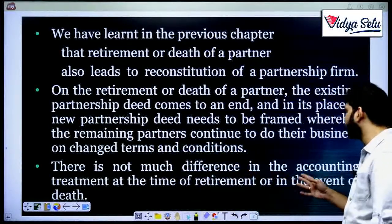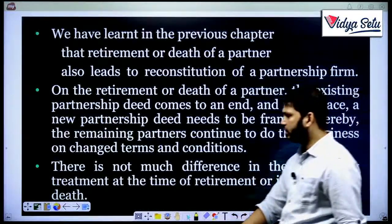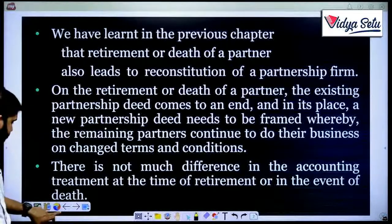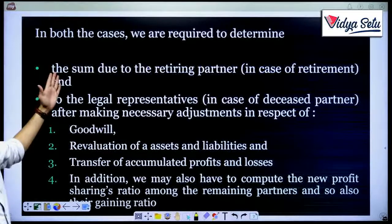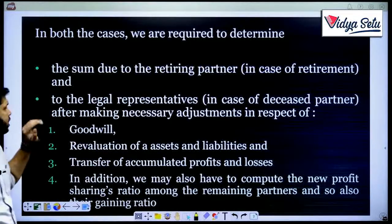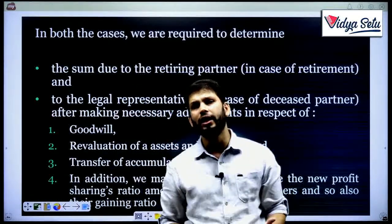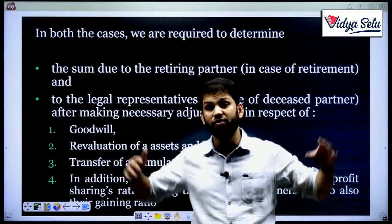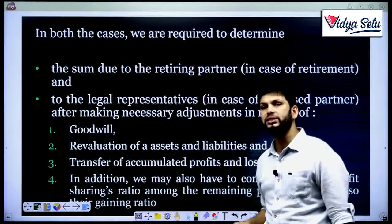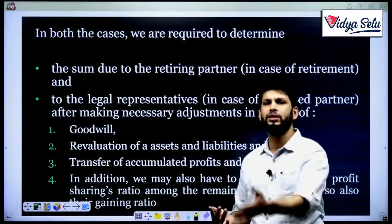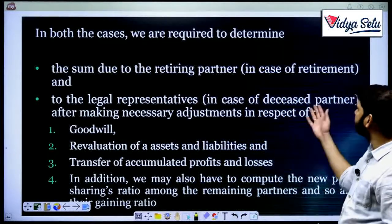There is not much difference in the accounting treatment at the time of retirement or in the event of death. In both cases we are required to determine the sum due to the retiring partner in the case of retirement, and to the legal representative in the case of death. Since the partner has already died, the money — whatever he earned over all these years — goes to the legal representative, who could be the wife, the son, or anyone written in his will.